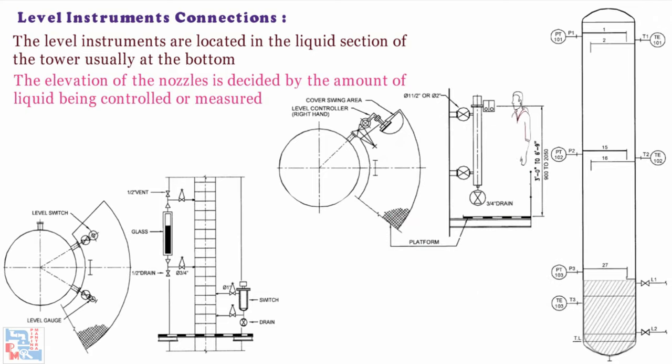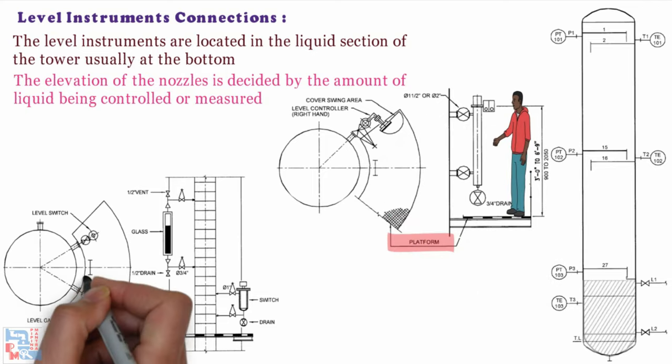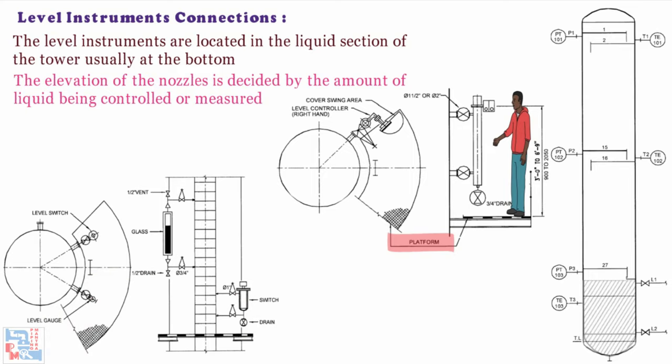Level controllers must be operable from grade and platform. And level gauges or switches may be from a ladder if no platform is available. You can also see typical orientations of level gauge and level switch nozzles and typical orientation of standpipe i.e bridle connections on your screens as well.